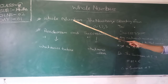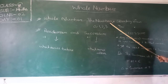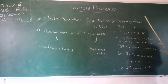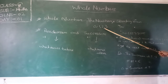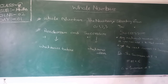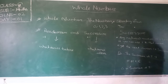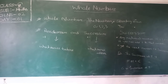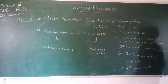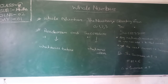What is a Whole Number? The numbers starting from 0, 1, 2, 3 up to infinity — this is called a Whole Number. We also state that if the Natural Numbers along with 0 form a collection, that is also called Whole Numbers.